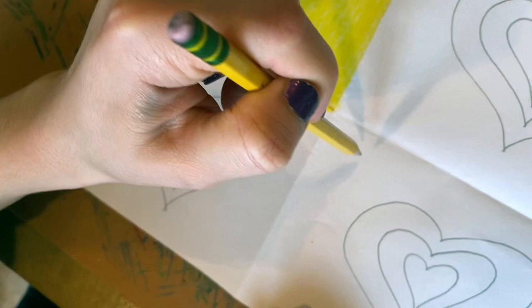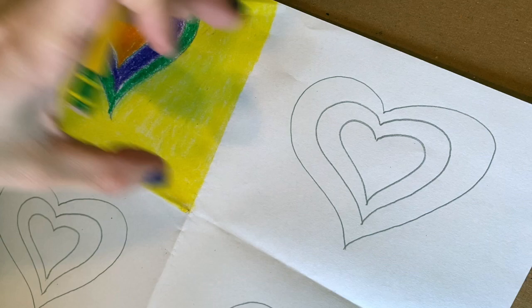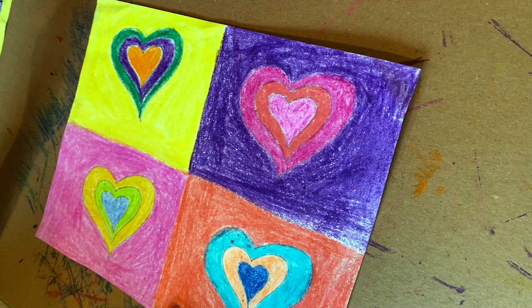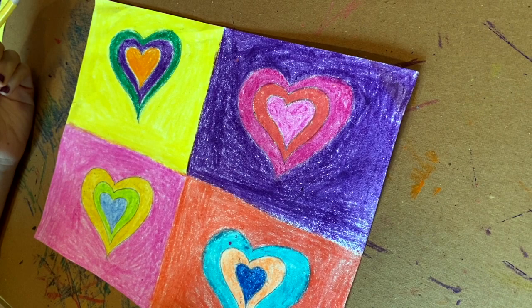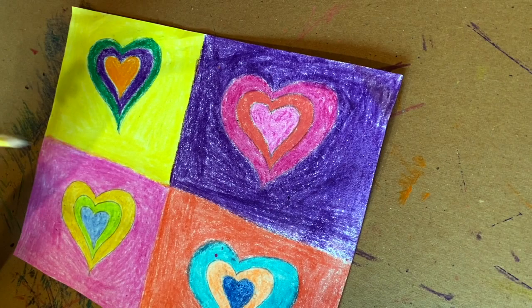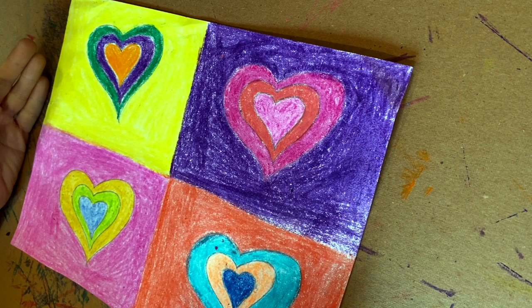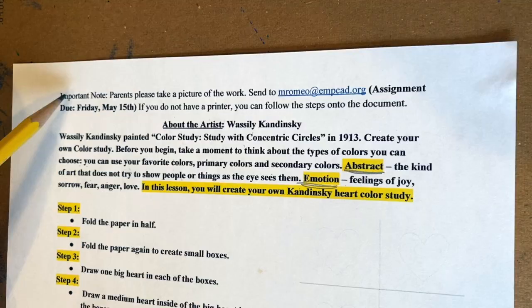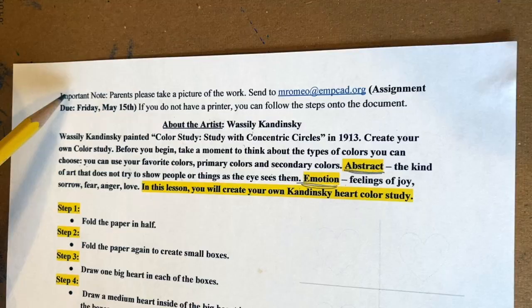Now you're going to do the second box, third box, and fourth box on your own. Remember, do not color the same colors on each box — use different colors. I have finished coloring all of the hearts and the boxes. I used different colors in each box and each heart. Whatever colors you have at home, you can use for this.